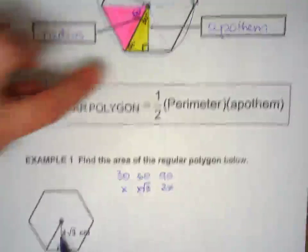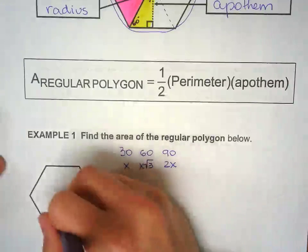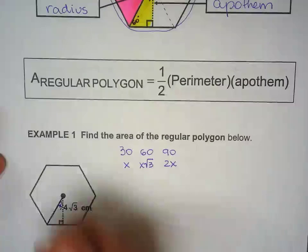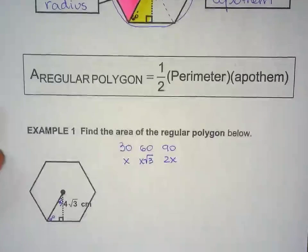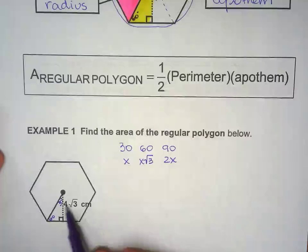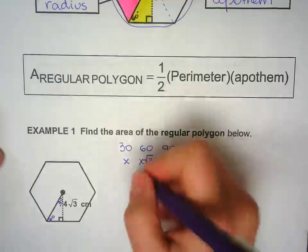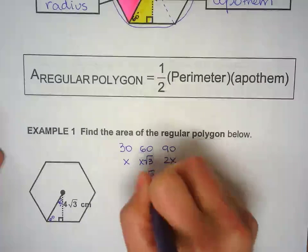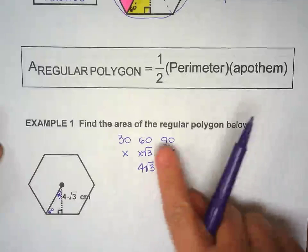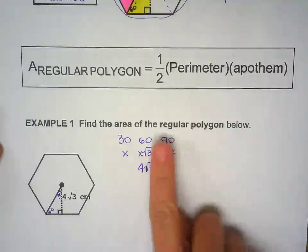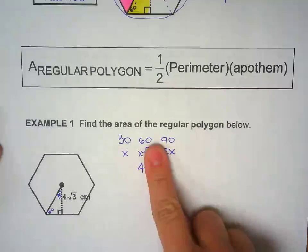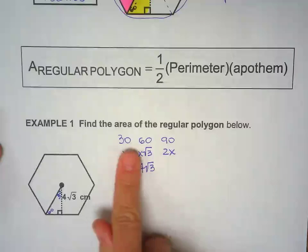And since we already did the calculations on our notes, I know this is 30 and this is 60. So the one across from 60 right there is 4 square root of 3. So right here under 60, I have 4 square root of 3. Since they're the same, square roots are the same, that means x equals 4.